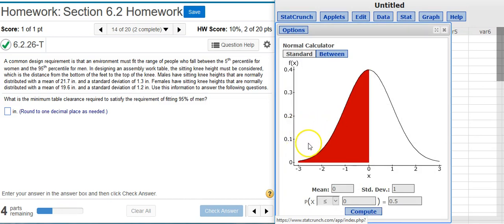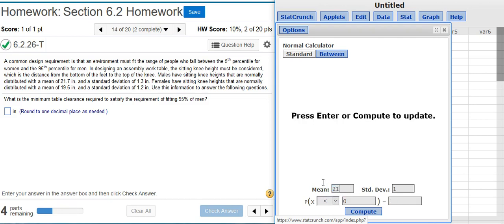Now I have my normal distribution calculator. The question is asking about ninety-five percent of men, so I need the distribution for the men. That's listed here in the problem statement, so I'm going to adjust my mean and my standard deviation to match what's there in the problem statement.